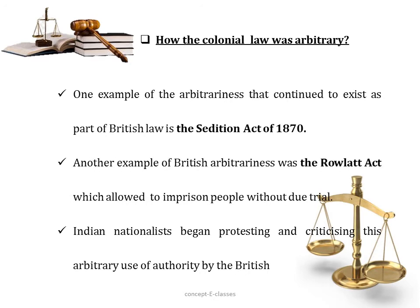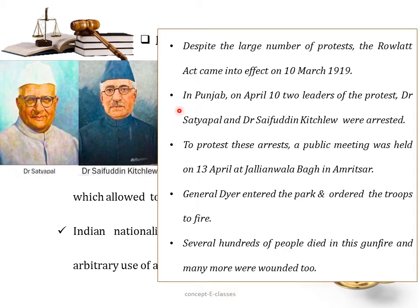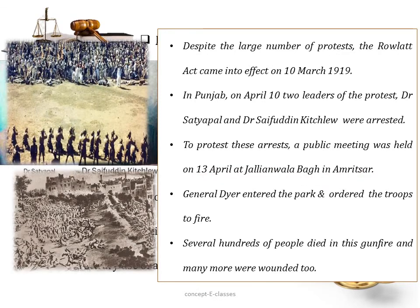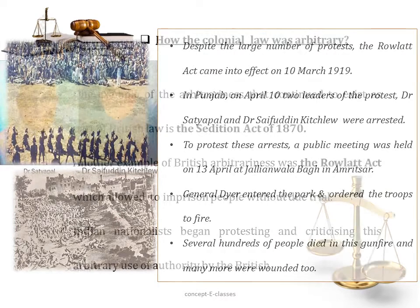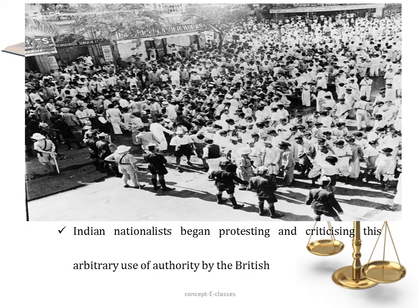Many nationalists like Mahatma Gandhi strongly opposed the Rowlatt Act. But despite the large number of protests, the Rowlatt Act came into effect on 10th March 1919. Many people started protesting from many areas. In Punjab, on April 10th, two leaders of the protest, Dr. Satyapal and Dr. Saifuddin Kichlu, were arrested without any prior trial. To protest these arrests, a public meeting was held on 13th April at Jallianwala Bagh in Amritsar. General Dyer entered the park with troops and ordered them to fire. Several hundreds of people died in this gunfire and many more were wounded. The Indian nationalists began protesting very strongly against this arbitrary use of authority by the British.